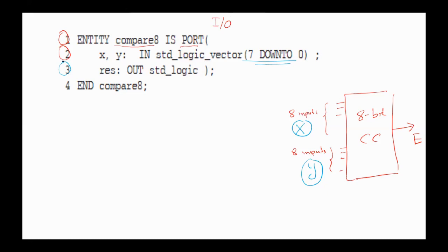Line 3 describes the output for the circuit. Here we have only one output, result, since we need to know if the values are equal or not equal. For example, if they are equal the output is 1, and if they are not equal the output is 0. The final line of the ENTITY section tells us that we are at the end of the description of the entity called compare8.